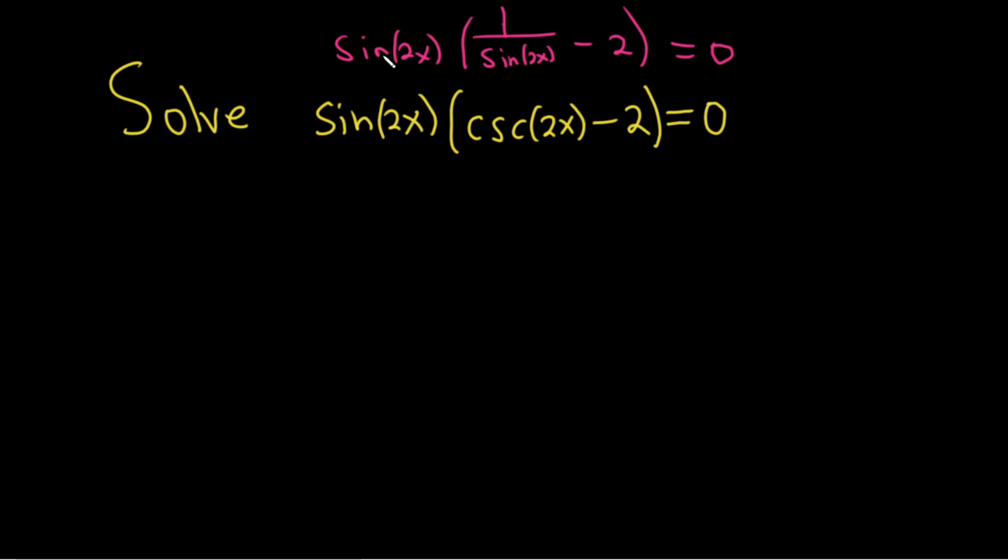If you set each factor equal to 0, for example, if you set sine 2x equal to 0, that's fine. However, any value of x that makes sine 2x equal 0 is not going to work in this equation because we have 1 over sine 2x. So let's just distribute through and ignore this fact that this could be equal to 0, because it can't, because we're dividing by sine 2x.